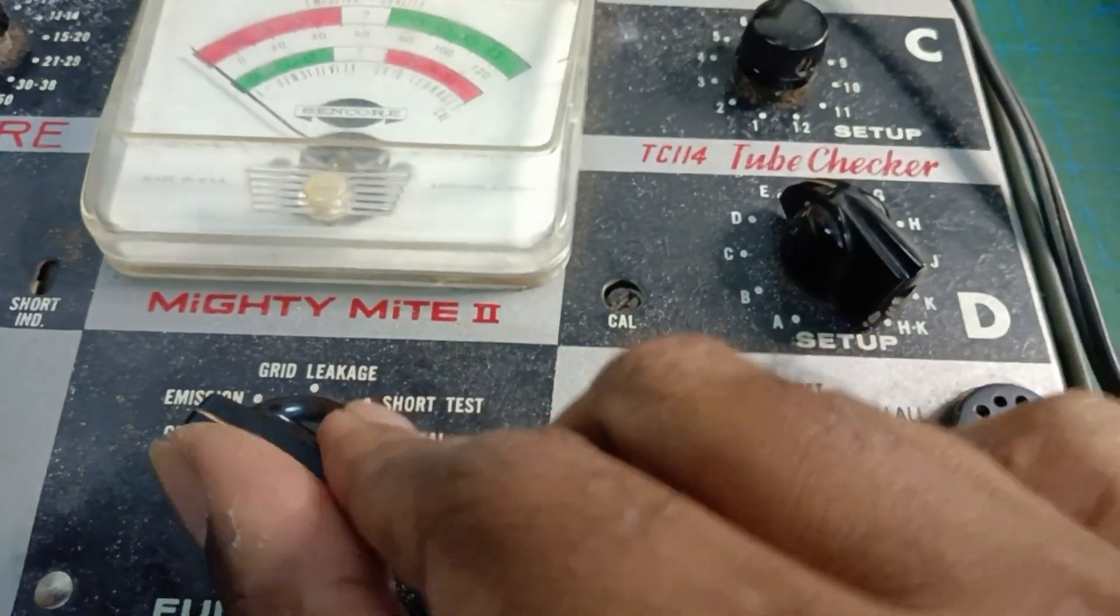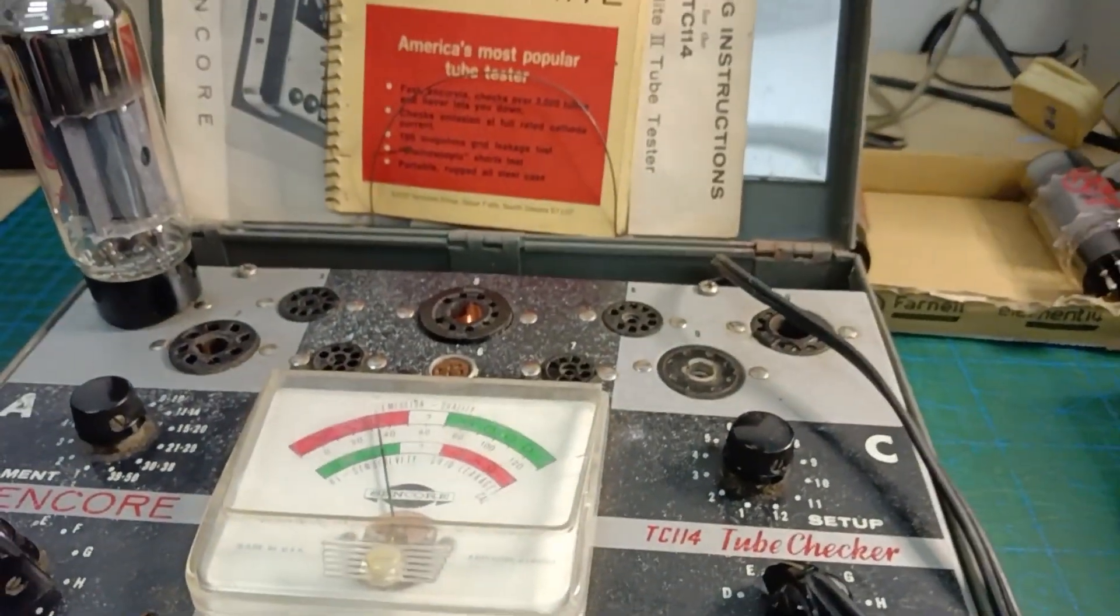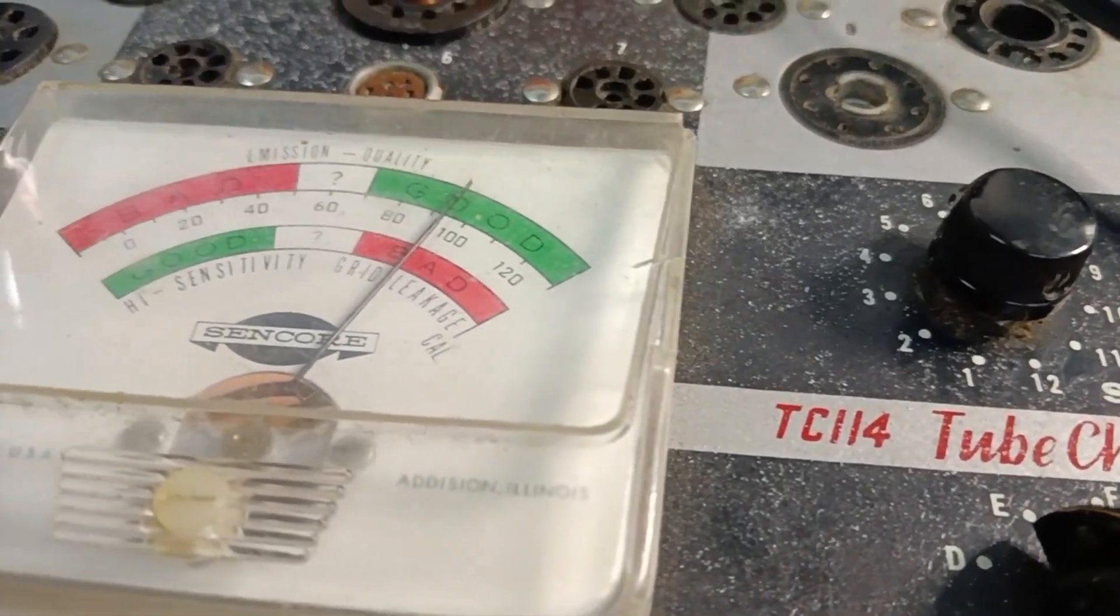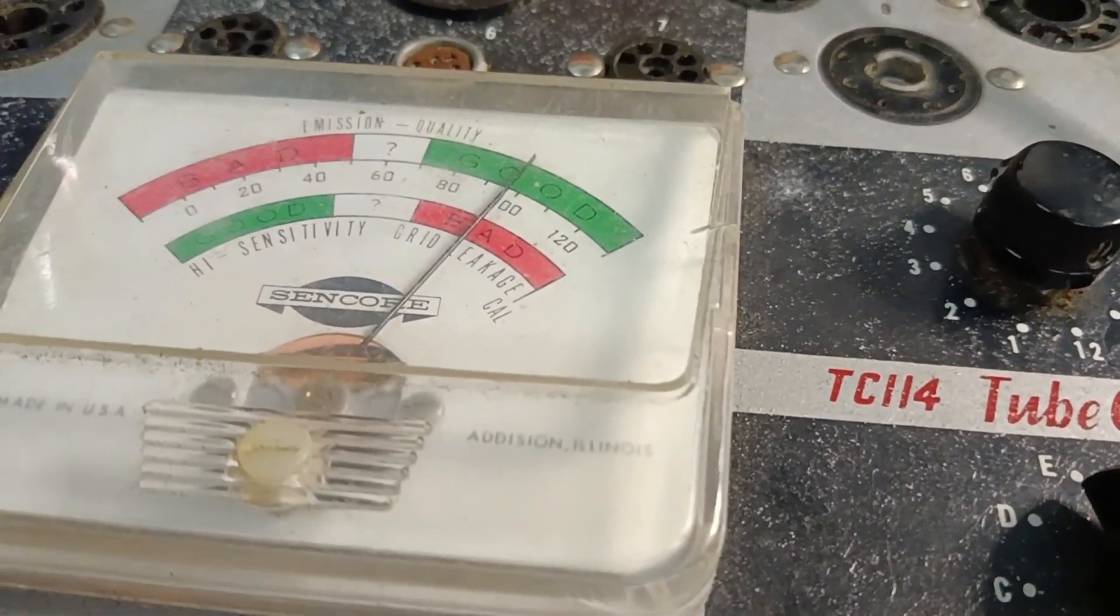The Sencor Mighty Might 2 is a vintage tube tester from the 60s or 70s, designed to quickly test for emission, shorts, and grid leakage. I've already looked up the settings for 6L6 from the tube chart. Let's get started.